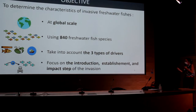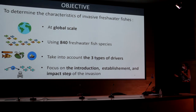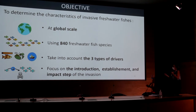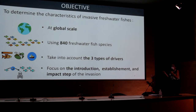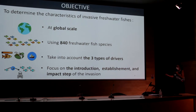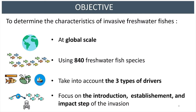Our aim in this study was to determine the characteristics of invasive freshwater fishes at the global scale, using 840 freshwater fish species, taking into account the three types of drivers and the three steps of the invasion.